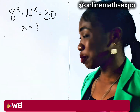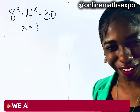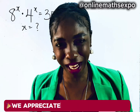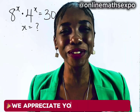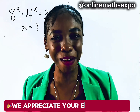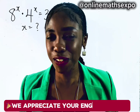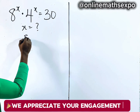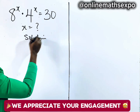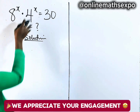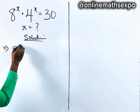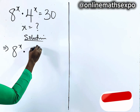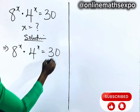Can you solve this beautiful exponential equation? It's so easy. Let me take you through it step by step. Let's repeat what we have: 8 to the power of x multiplied by 4 to the power of x is equal to 30.